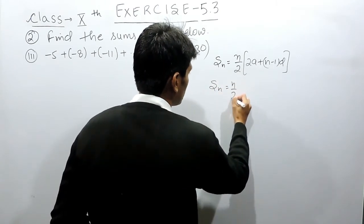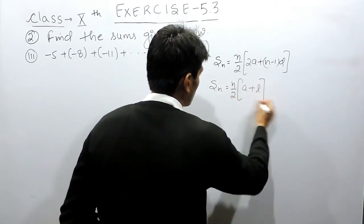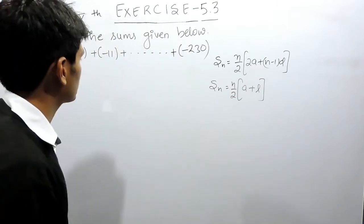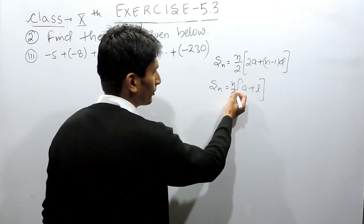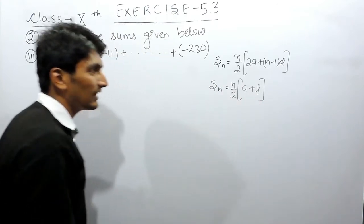When the last term is given to you, you can use this formula also to find the sum. Here n is the number of terms, a is the first term, and l is the last term.